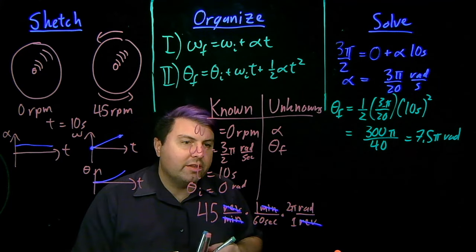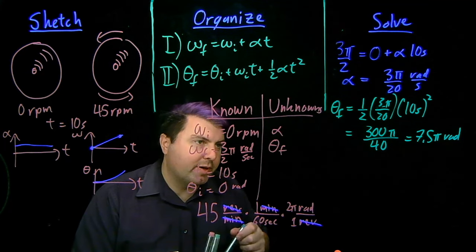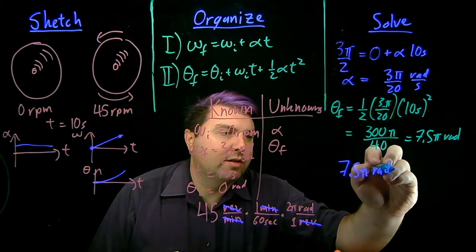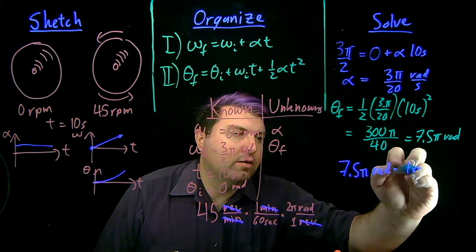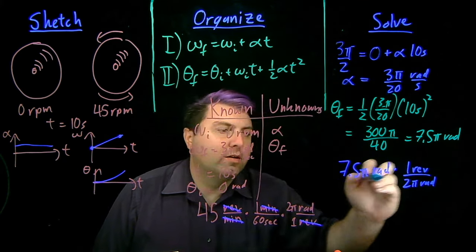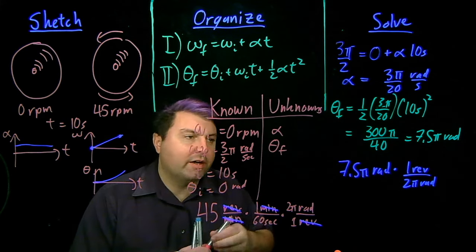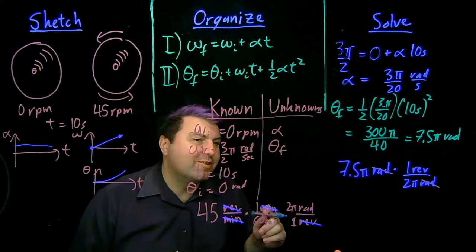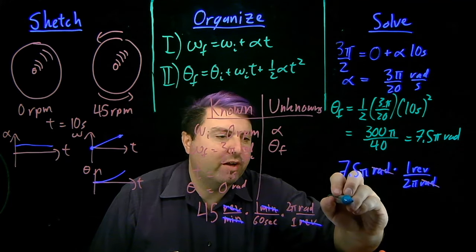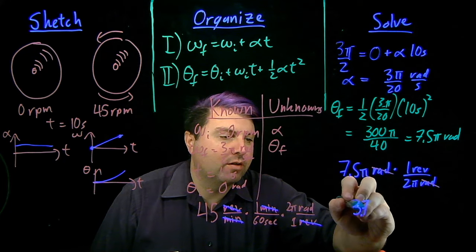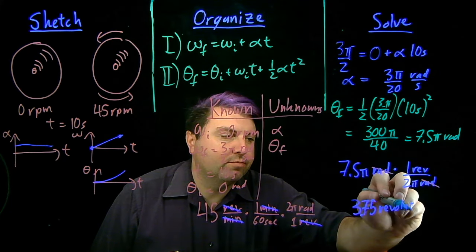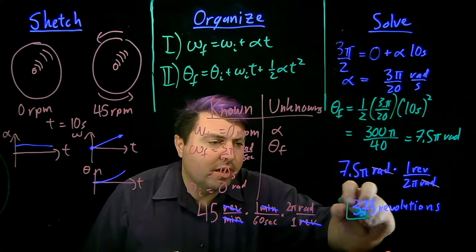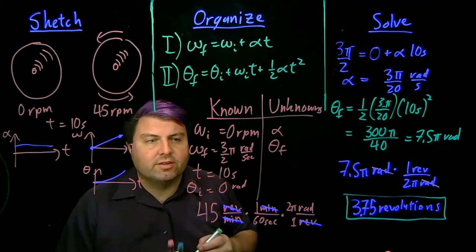Now, if we choose instead, we can then find it in our revolutions, which is probably a little bit better. So then we again have 7.5 pi radians times 1 revolution divided by 2 pi radians. So we can get another cancellation of the radians. And then we're dividing by 2 pi. 7.5 divided by 2 is 3.75. So we have 3.75 revolutions. And that's how many revolutions it takes as it accelerates from 0 to 45 over 10 seconds.